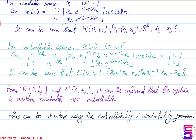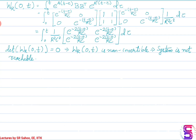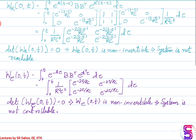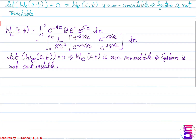Another way to check this is by calculating the controllability and reachability Grammians — specifically, whether they are invertible. The reachability Grammian over the interval [0, t] is calculated, and it turns out that for any finite final time, the determinant of the reachability Grammian is 0, making it non-invertible and indicating the system is not reachable. Similarly, the controllability Grammian is also non-invertible, confirming the system is not controllable.